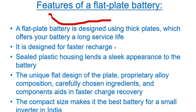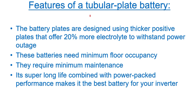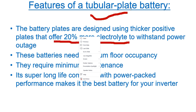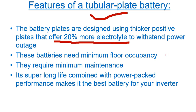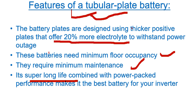Features of flat plate battery: it has thick plates and fast charging. Features of tubular battery: it has 20% more electrolyte compared to a flat plate battery, consumes very less space, requires very less maintenance, and has a super long life. So while purchasing, go for the tubular plate battery — it is the best choice.